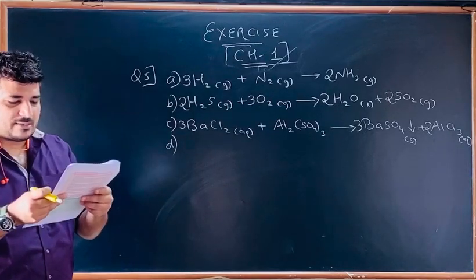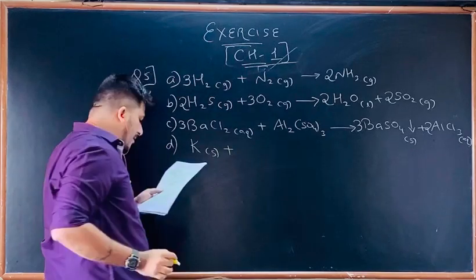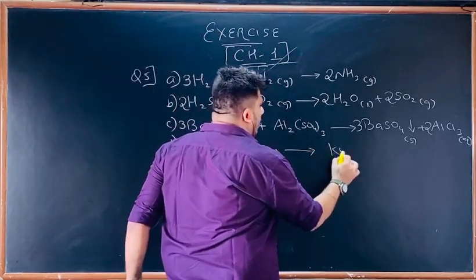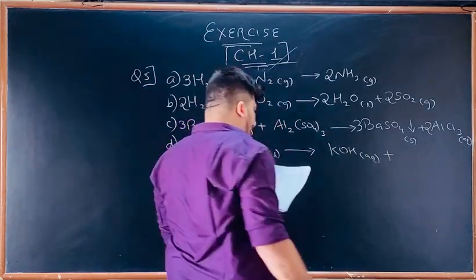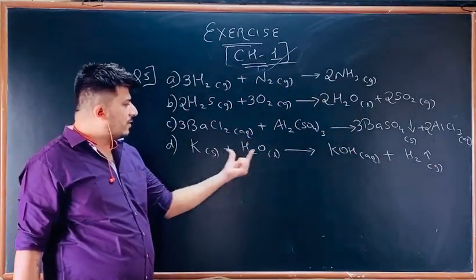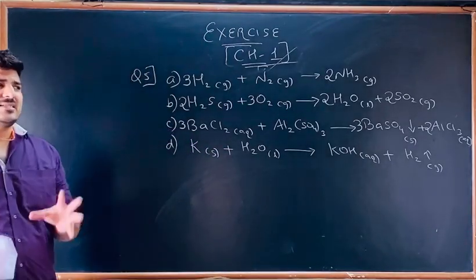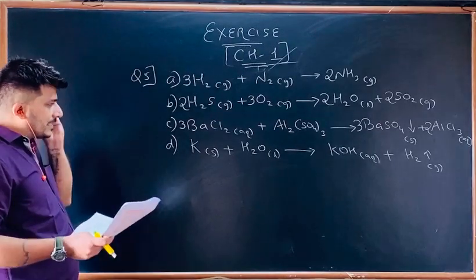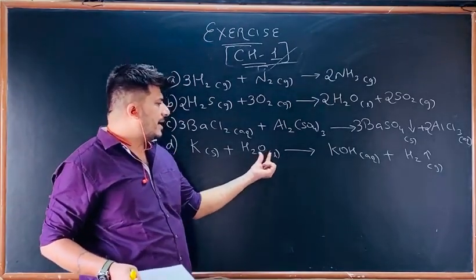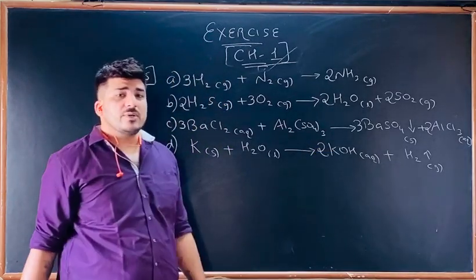Part (d): potassium metal (K, solid) reacts with water (H₂O, liquid) to give potassium hydroxide (KOH, aqueous) plus hydrogen gas (H₂). Remember: sodium, potassium, lithium, magnesium — when these metals react with water, hydrogen gas is produced. To balance: O is 1 on both sides; hydrogen on the left is 2 in H₂O, on right is 1 in KOH plus 2 in H₂, that is 3 — so make it even by multiplying by 2. Balanced: 2K + 2H₂O → 2KOH + H₂.